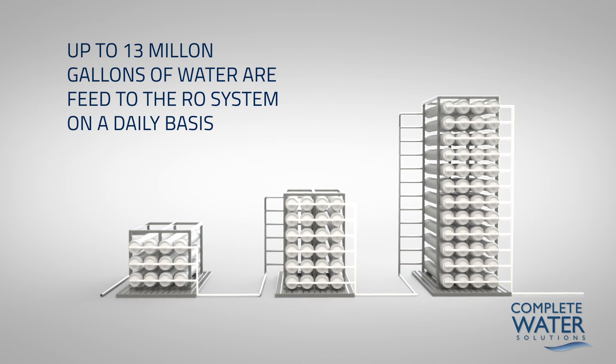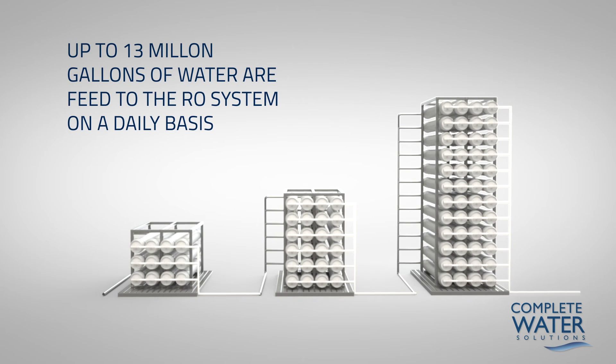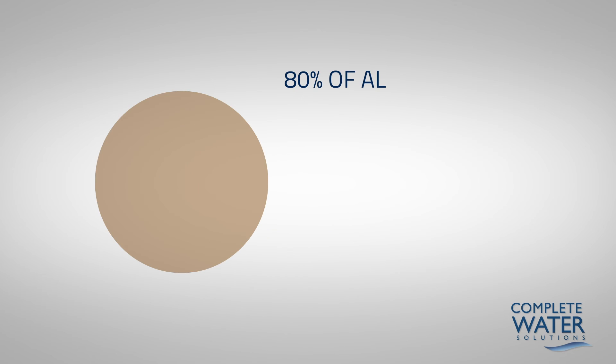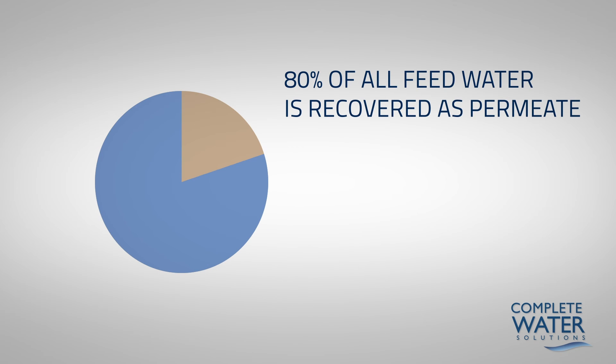Up to 13 million gallons of water are fed to the reverse osmosis system on a daily basis. As the feed water passes through each stage, more reverse osmosis permeate water is extracted. 80% of all feed water is recovered as permeate, reverse osmosis water in this example.